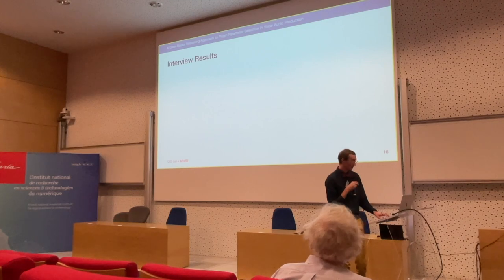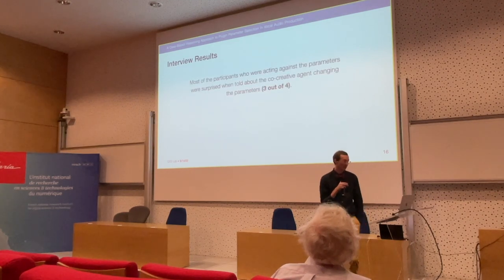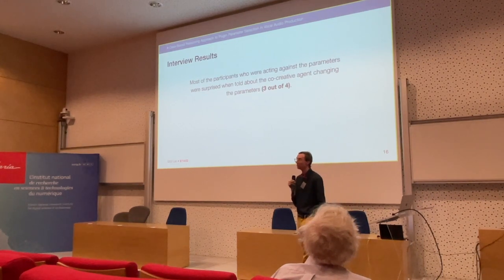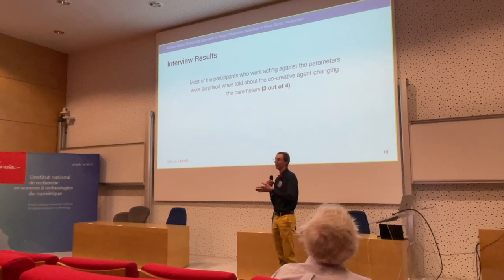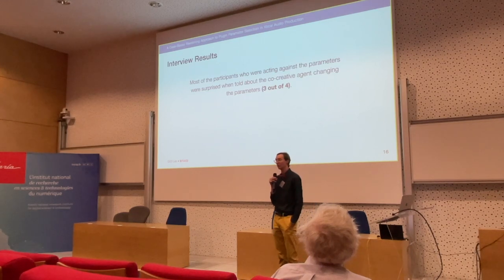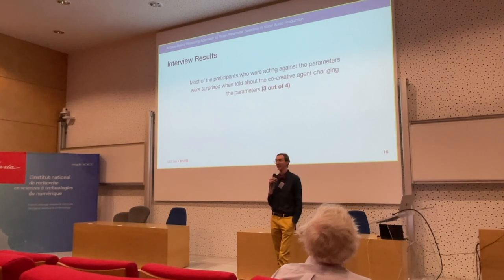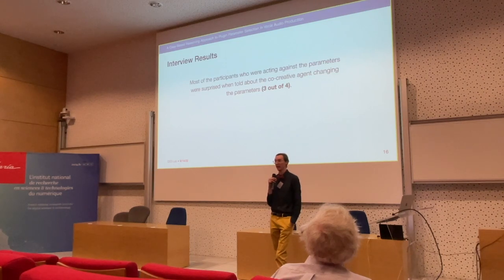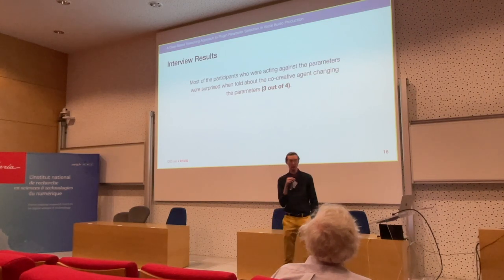For the interview results, when participants acted against the parameter suggestions — those being the interpolated values — they were essentially surprised by what had happened and thought it was due to a bug in the system. A lot of them did so because they thought something had messed up or they had broken the experiment, leading to a lot of frustration. Meanwhile, the people who went along with the interpolated values were very happy with them. So it was essentially an act of surprise: some people fought against it, and some people went with it.